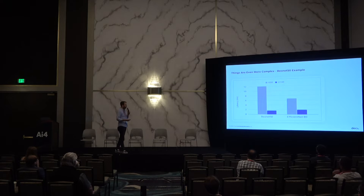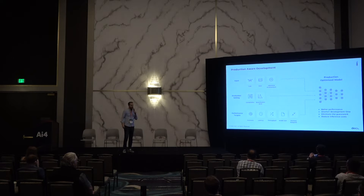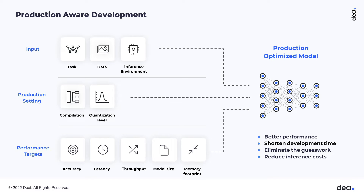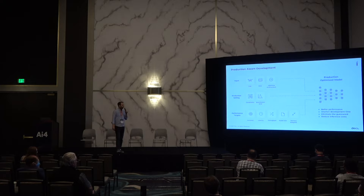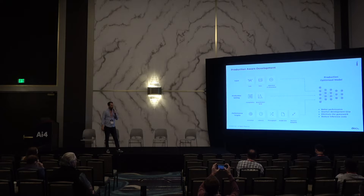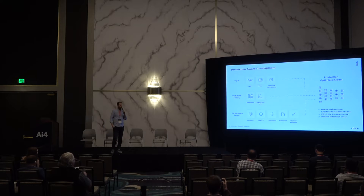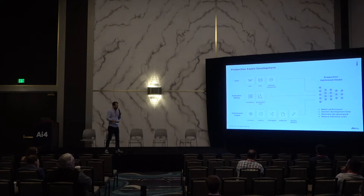The idea is to optimize model design for the given algorithm and deployment scenario. When we choose our models, we need to consider not only accuracy but also the task, the data, the inference environment, the compilation and quantization level, and all the characteristics of accuracy, latency, throughput, model size, and memory footprint — in order to know we're building on the right architecture to reach production.